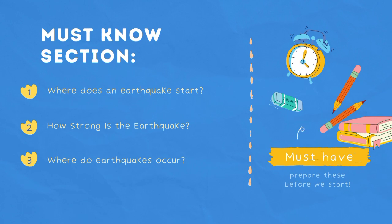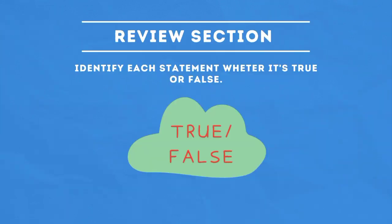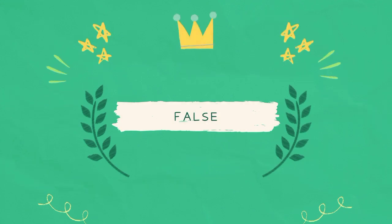Let us have a short pre-assessment first. Identify each statement whether it's true or false. Here we go. Statement: The epicenter is the origin or the center of the earthquake. The answer is false.